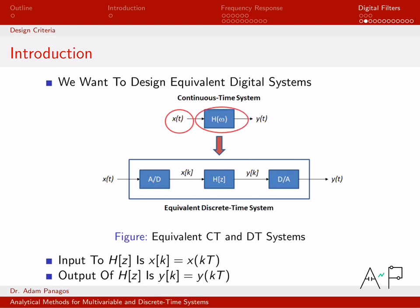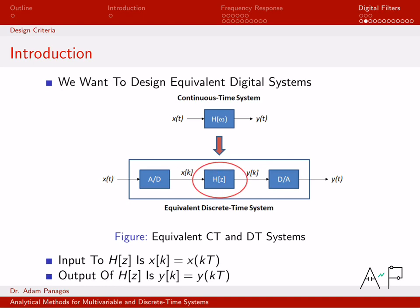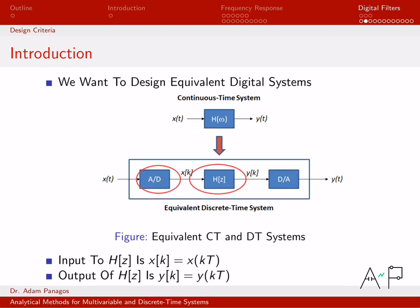Here's a block diagram of how our continuous time system works: X(t) goes into a filter with frequency response H(ω) and Y(t) comes out. What we're going to do is replace this with an equivalent block containing a discrete time system. The input is still X(t), but inside the block I sample it with an A/D to get X(k), run it through a digital filter H(z) to get Y(k), then convert back with a D/A to get Y(t). If we design it correctly, both outputs will match exactly.